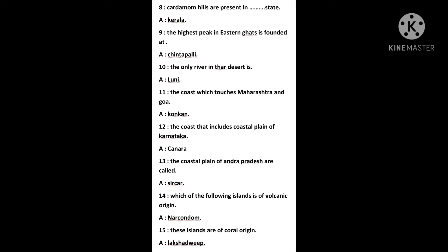The Cardamom Hills are located in the state of Kerala. The highest peak in the Eastern Ghats is found at Chintapalli, Odisha. The coast which touches Maharashtra and Goa. The coastal plain of Karnataka is called Kanara.